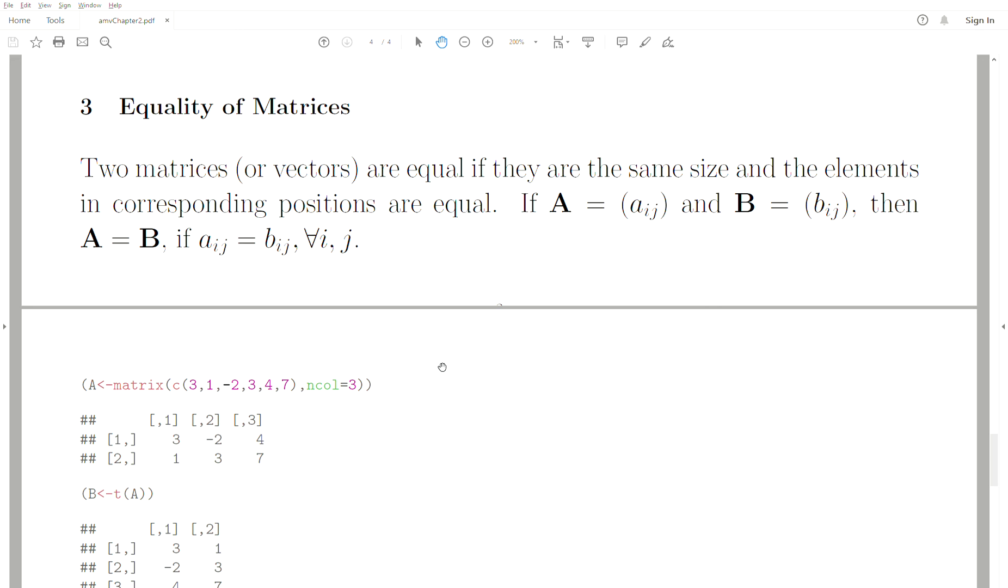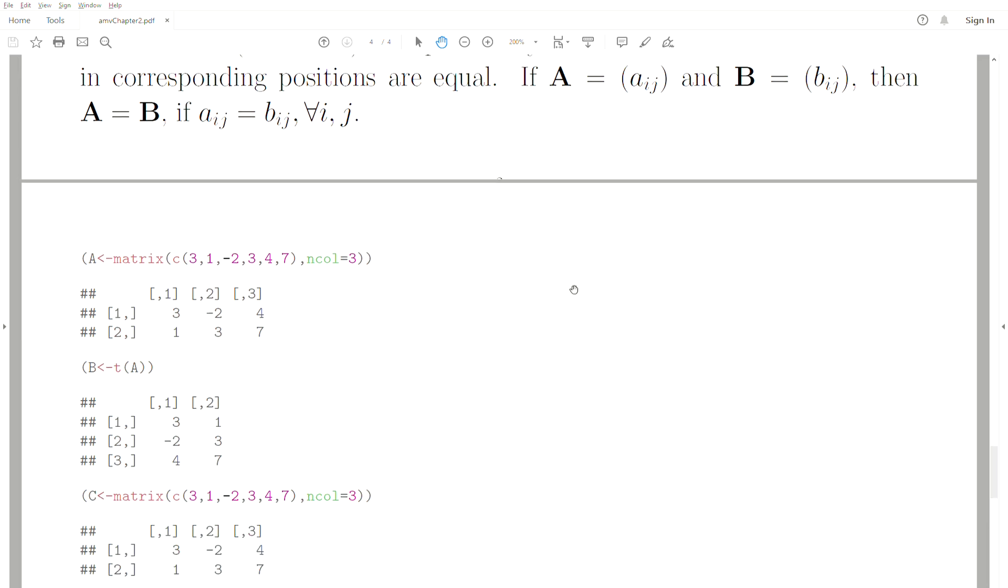Now the equality of matrices. First, the matrices have to be the same size to compare them. We know it's a matrix because it's bold and capital. Two matrices are equal if each of the elements are equal, for all i and j.